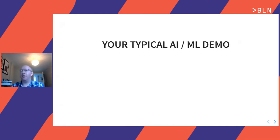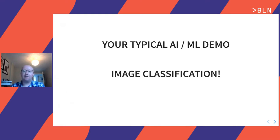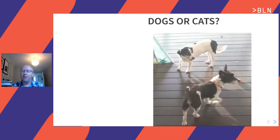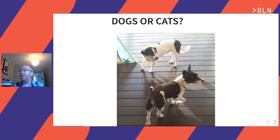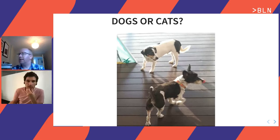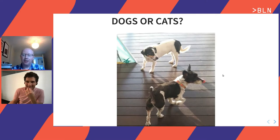A little bit of audience participation. Your typical AI ML demo is images — image classification to be specific. It's fun, it's easy. So audience participation: what is this? Our easy answer is these are dogs. Image classifier, cats or dogs? Dogs.